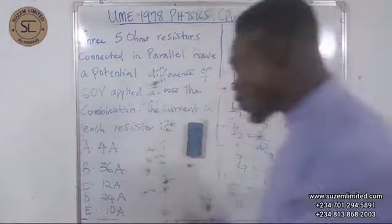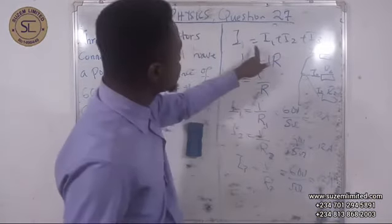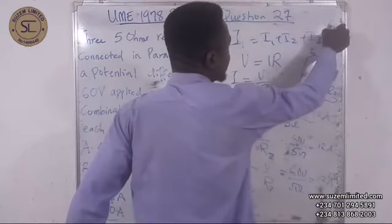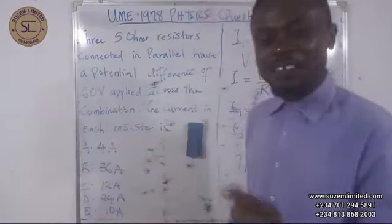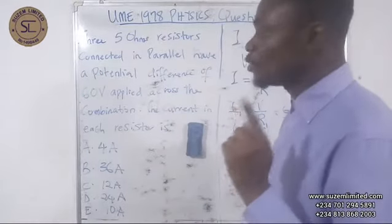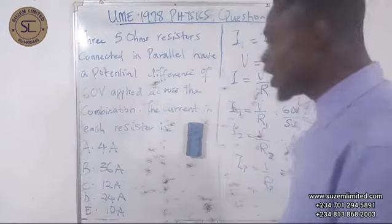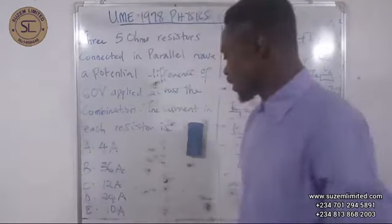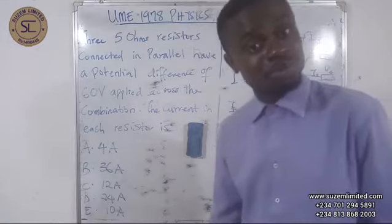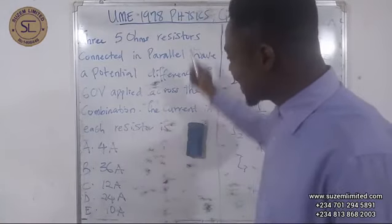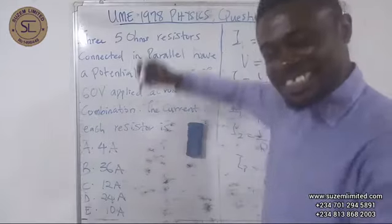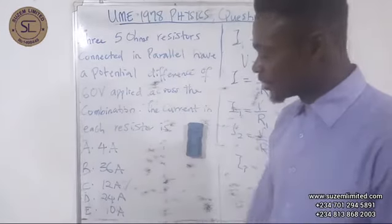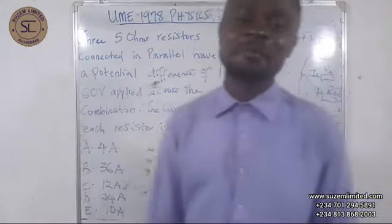The total current is the sum of all three: 12 plus 12 plus 12, which equals 36 amperes. You must be very careful when answering UME questions. If you mistakenly calculated the total current, you'd pick B (36 amperes), but that's wrong. The question asks for the current in each resistor, so the answer is C — 12 amperes. Thank you very much for your attention, see you next time.